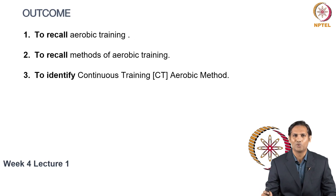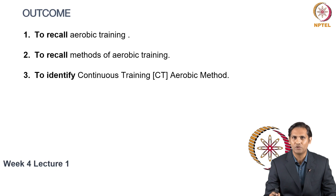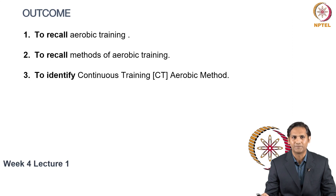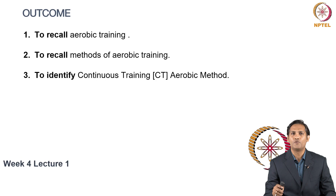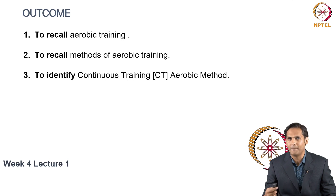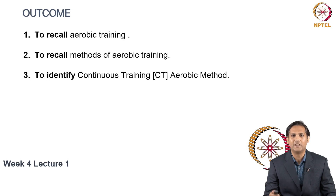The outcome of lecture 1 is to recall aerobic training, so it should be very clear whether whatever training you are doing falls under aerobic training method or not. You would also recall the different methods where you can improve your aerobic capacity, and lastly, relate these methods to your own workout — identifying the continuous training method within your self-workout routine and making more progression in your existing aerobic training.